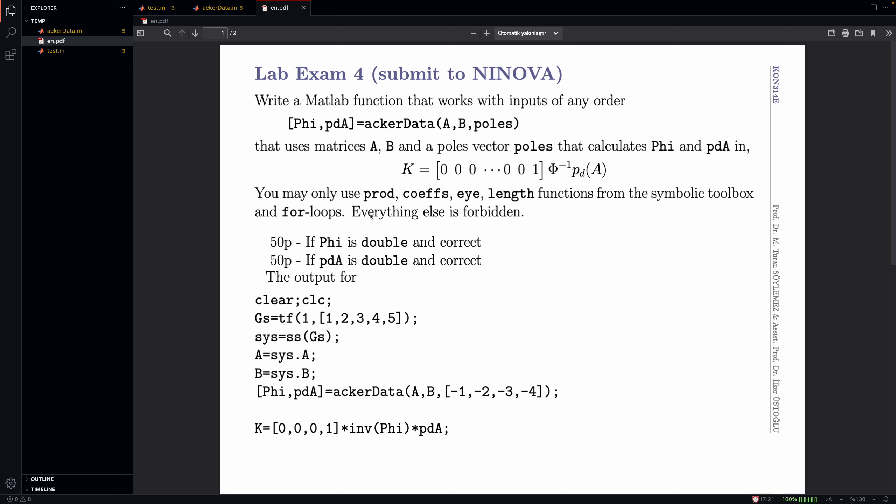Hello everyone, this is quiz 4. This is about state space. We have this Ackermann formula which we want to use, but in order to use it we need to calculate what phi is and what PDA is, and we're basically after that.